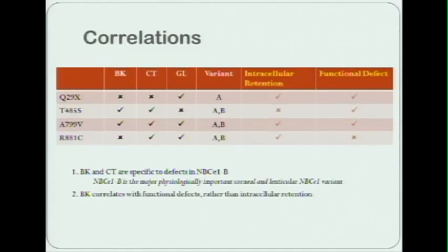The second interesting aspect is that band keratopathy associates specifically with functional defects and not with intracellular retention. In order for the R881C mutation not to manifest a band keratopathy, it would have to be getting out to the plasma membrane in order for its function to be revealed. This suggests very much that our original NBCe1 trafficking model in kidney cells is not terribly helpful for looking at corneal phenotypes, which rather begs a study of proper trafficking studies of NBCe1B mutants in the actual eye cells that we're interested in.